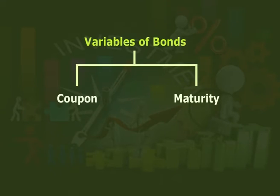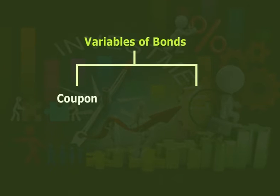The implication of Malkiel's bond price theorems to bond investors concerns how investors should act with regard to trading in bonds. Specifically, the two major variables important in assessing price changes are: number one, the coupon, and number two, the maturity. To receive the maximum impact from an expected change in interest rates, investors should purchase low coupon, long maturity bonds.